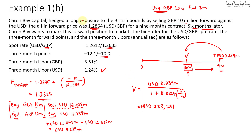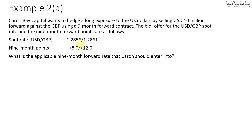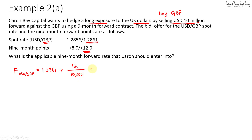Now let's look at the reverse scenario where Karen Bay Capital wants to hedge a long exposure to US dollars by selling 10 million USD forward against the pound using a nine-month forward contract. We have the same spot rate and nine-month points for dollar-to-pound. Since I want to sell USD and the US dollar is not the base currency, I relate it back to the base currency — selling USD means buying pounds. To buy pounds I take the offer price and offer-side points.